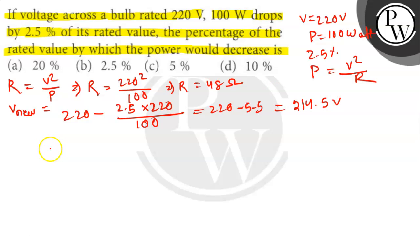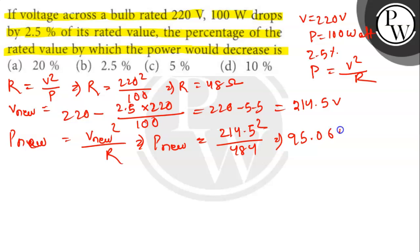Since now the voltage has been changed, the power will also be changed accordingly. New power will be P new is equal to V new square divided by R. Here P new is equal to 214.5 square divided by 484. The value of P new is 95.06 Watt.